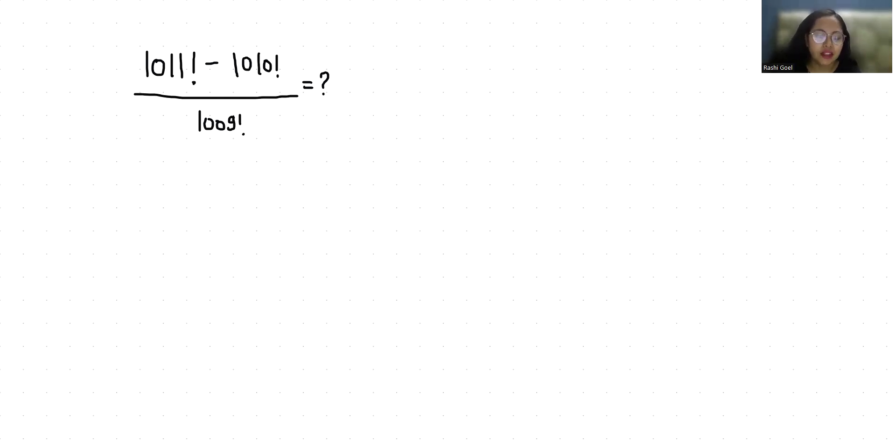Let's simplify this. We know the formula of factorial: n! = n × (n-1) × ... × 3 × 2 × 1. So here we have (1011! / 1009!) - (1010! / 1009!).